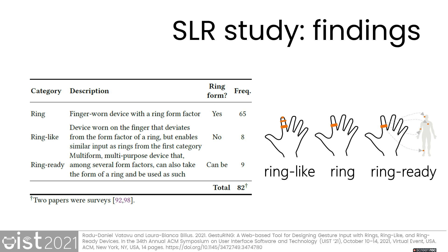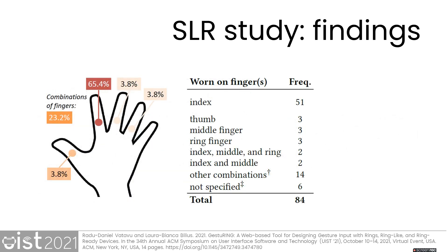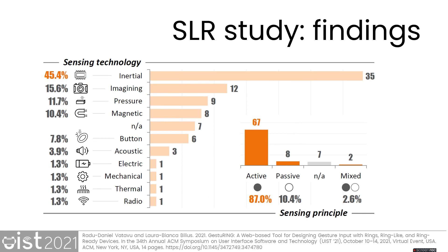Most of the devices encountered in the scientific literature fell into the first category of our ring taxonomy — finger augmentation with a ring form factor device. However, the remaining 20% of devices deviated from the ring form factor, either augmenting more parts of the finger in the case of ring-like devices, or targeting multiple forms and purposes as in the case of ring-ready devices. Most of the rings were intended to be worn on the index finger, and in 23% of cases, combinations of fingers were targeted, such as two rings worn on the index and middle fingers.